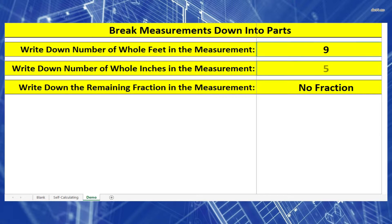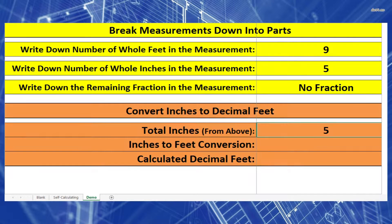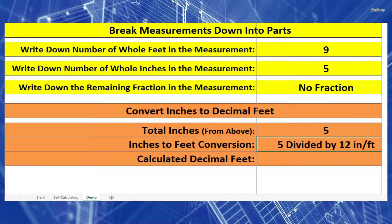Write down 9 foot and 5 inches. Keep them separate because we deal with them differently. We're going to start with the smaller number first, 5 inches. To convert inches into feet, we need to divide by 12 inches per foot.